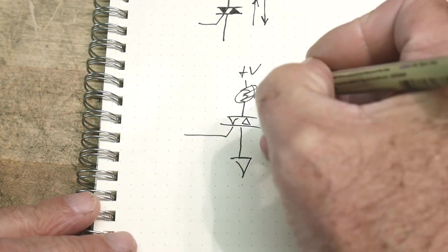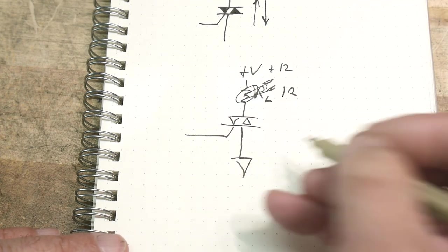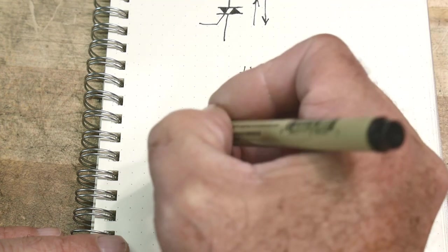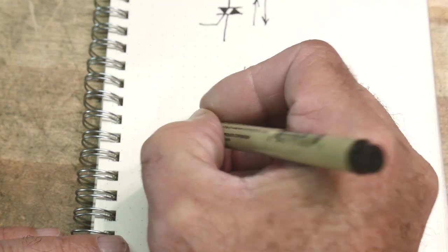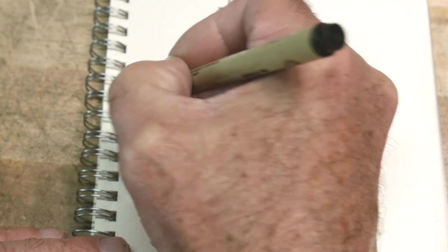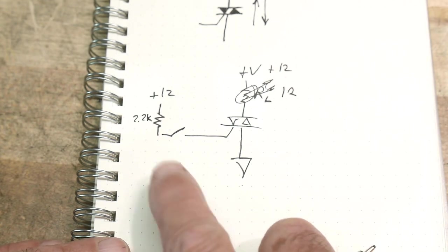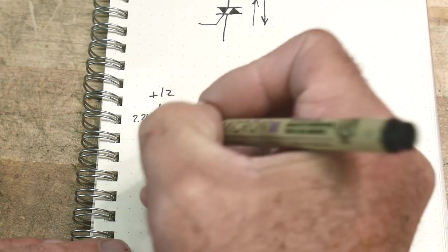And this is 12 volts. And this is ground. And we're controlling it through a switch. Okay. And the switch is a 2.2k resistor pulling up. And that's the circuit that we had.